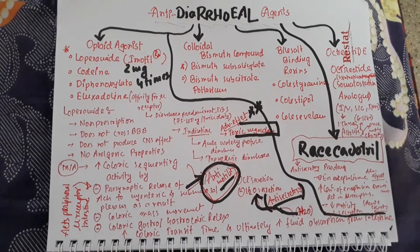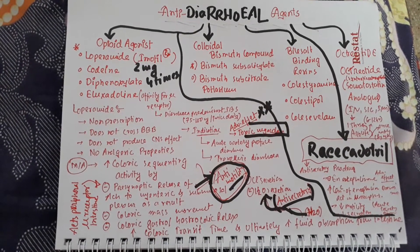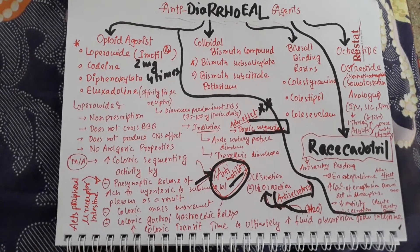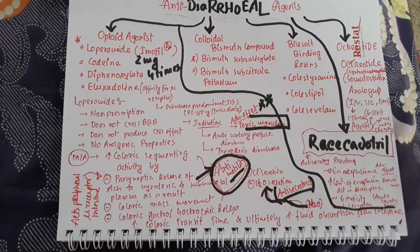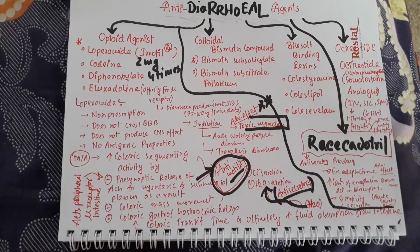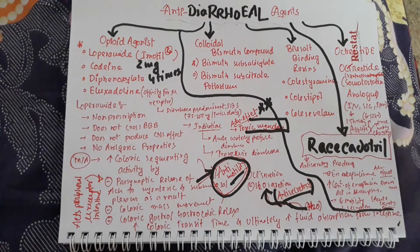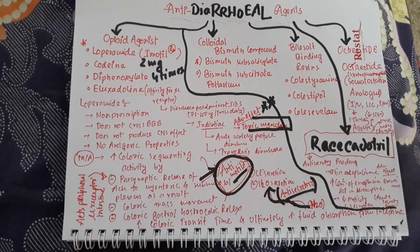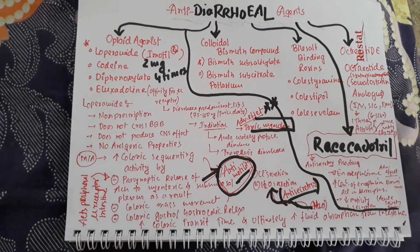Welcome to my channel, Pharmacology Made Easy. Today we will discuss anti-diarrheal agents. First, to discuss anti-diarrheal agents, we need to know what diarrhea is. Diarrhea is the passage of loose, watery stools more than three times per day, or some define it as more than 200 grams of stool produced per day. There are three kinds of diarrhea: acute watery diarrhea, dysentery, and persistent diarrhea.